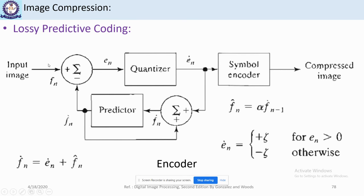The input image pixel and its predicted value are used to compute the error, which is input for the quantizer. The quantizer maps it to another range. This error also goes as input to the symbol encoder and is added to the previous pixel prediction so we can get the input for the predictor. The predictor predicts the next pixel value based on the previous prediction and the previous error.